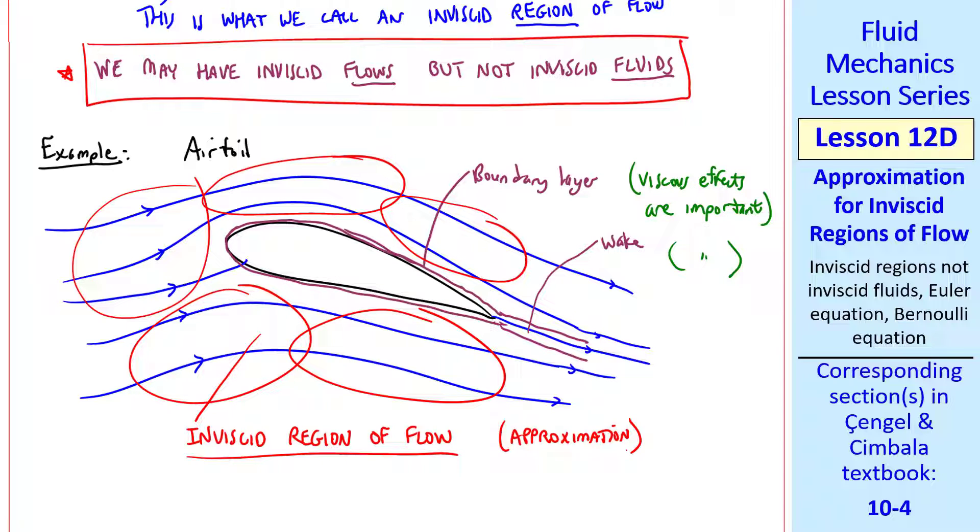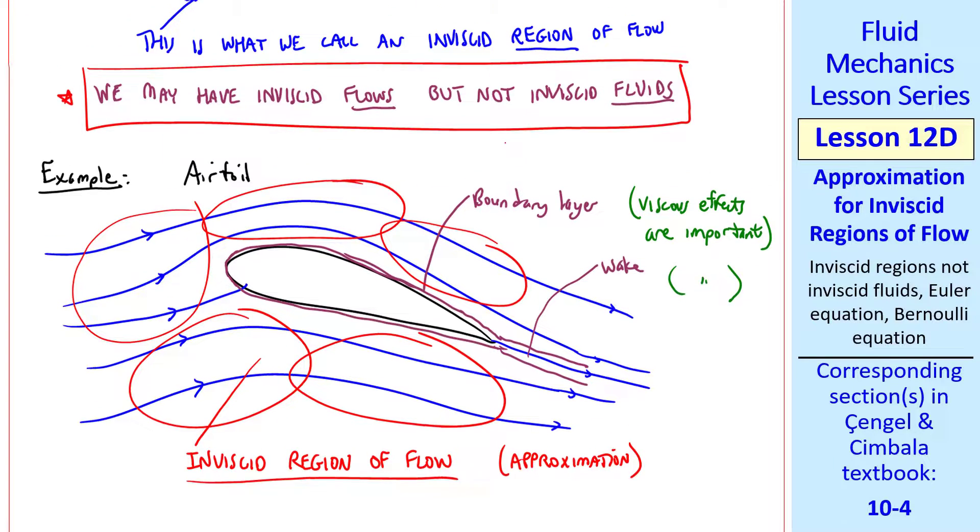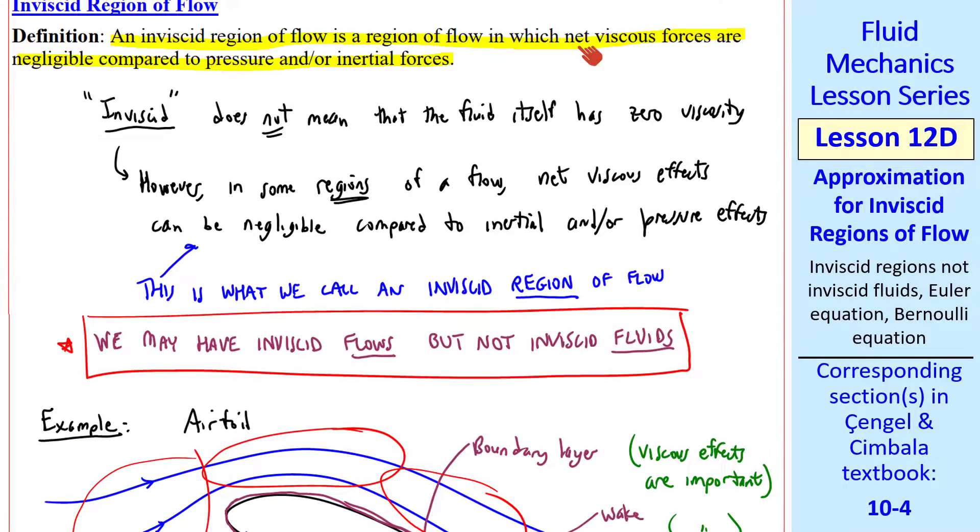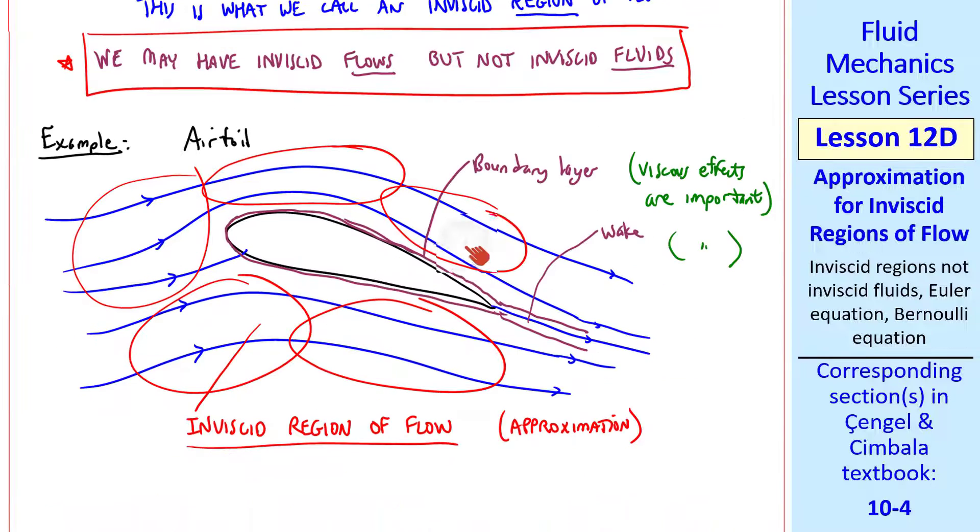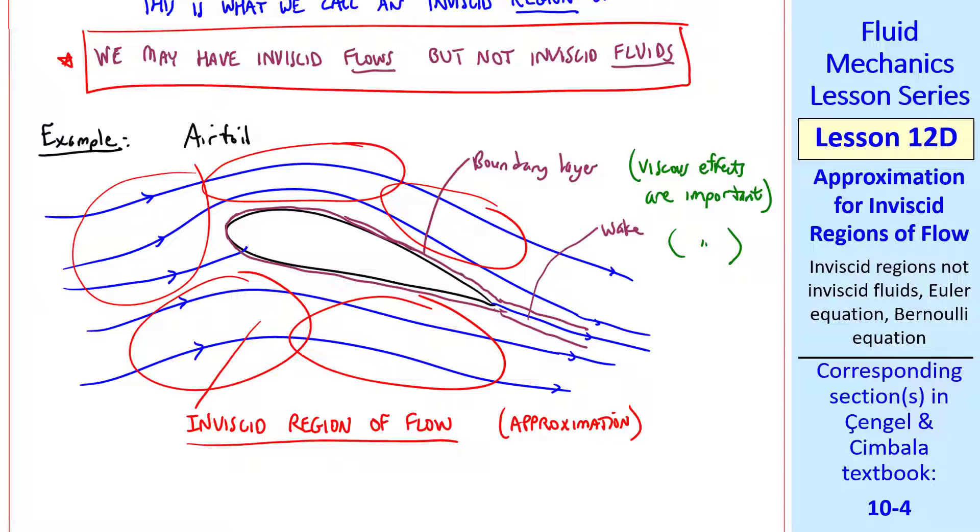This, of course, is an approximation. Viscosity is always acting in these regions. It's just as I said in the definition. The net viscous forces are negligible compared to pressure or inertial forces. In the case of an airfoil, it turns out that we can solve the problem inviscidly and get a very good approximation of the lift, provided that the angle of attack isn't so large that the flow over the wing stalls or separates. We'll talk in more detail about airfoils later on in a different lesson.